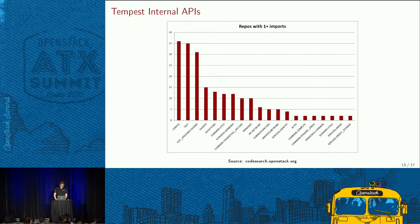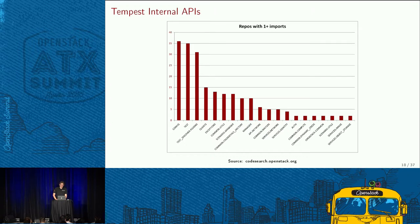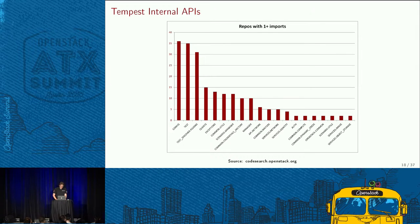The same graph for internal APIs shows that a lot of them are being used. The config spike goes along with the plugin one — there's a small utility in the config module, just three or four lines of code, that allows you to register config options, and it's used by pretty much all plugins. The test spike is the attribute decorator.